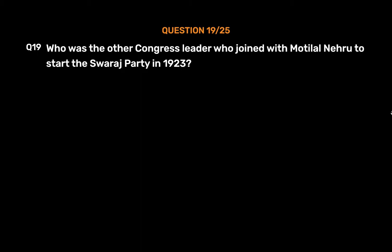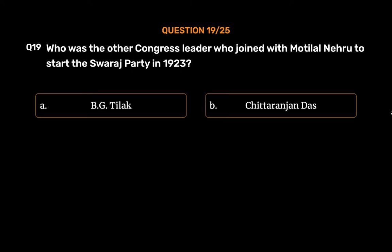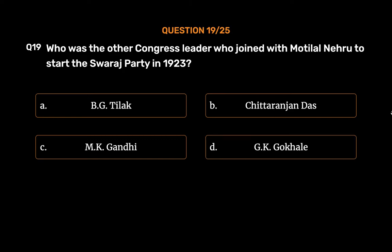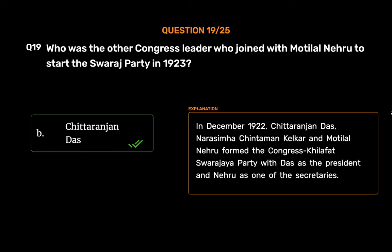Question No. 19. Who was the other Congress leader who joined with Motilal Nehru to start the Swaraj party in 1923? Option A. B.G. Tilak. Option B. Chittaranjan Das. Option C. M.K. Gandhi. Option D. G.K. Gokhale. The correct answer is Option B, Chittaranjan Das. In December 1922, Chittaranjan Das, Narsimha Chintaman Kelkar, and Motilal Nehru formed the Congress Khilafat Swarajaya Party, with Das as the President and Nehru as one of the secretaries.